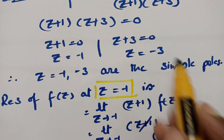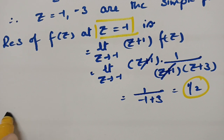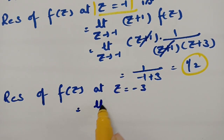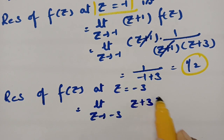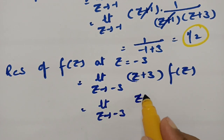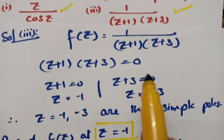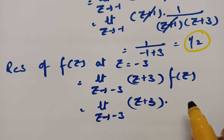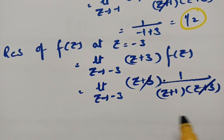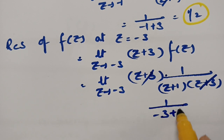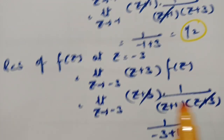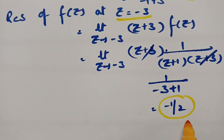We also find the residue at z = -3. Residue of f(z) at z = -3 is: limit as z tends to -3 of (z+3) × 1/[(z+1)(z+3)]. Cancelling (z+3) and substituting z = -3 gives (-3+1) = -1/2. Therefore, the residue of f(z) at z = -3 is -1/2.